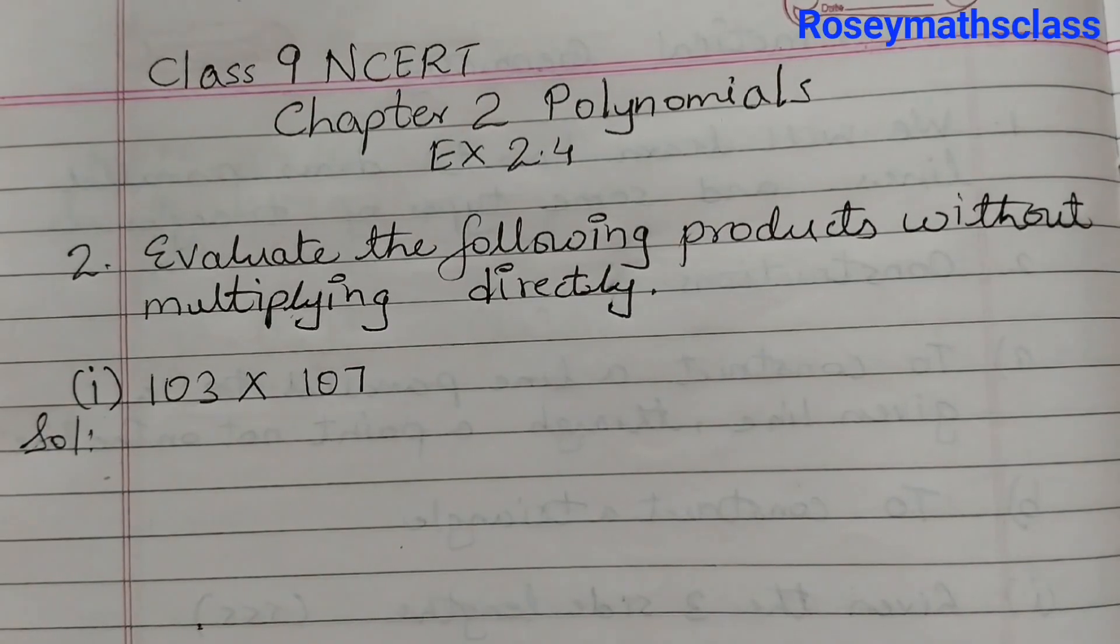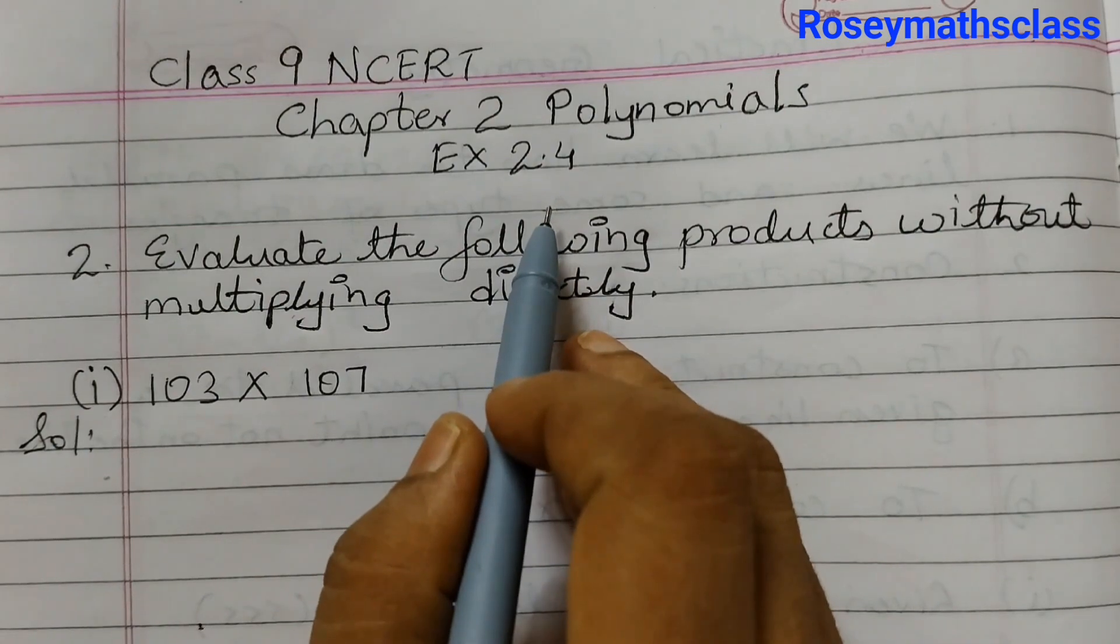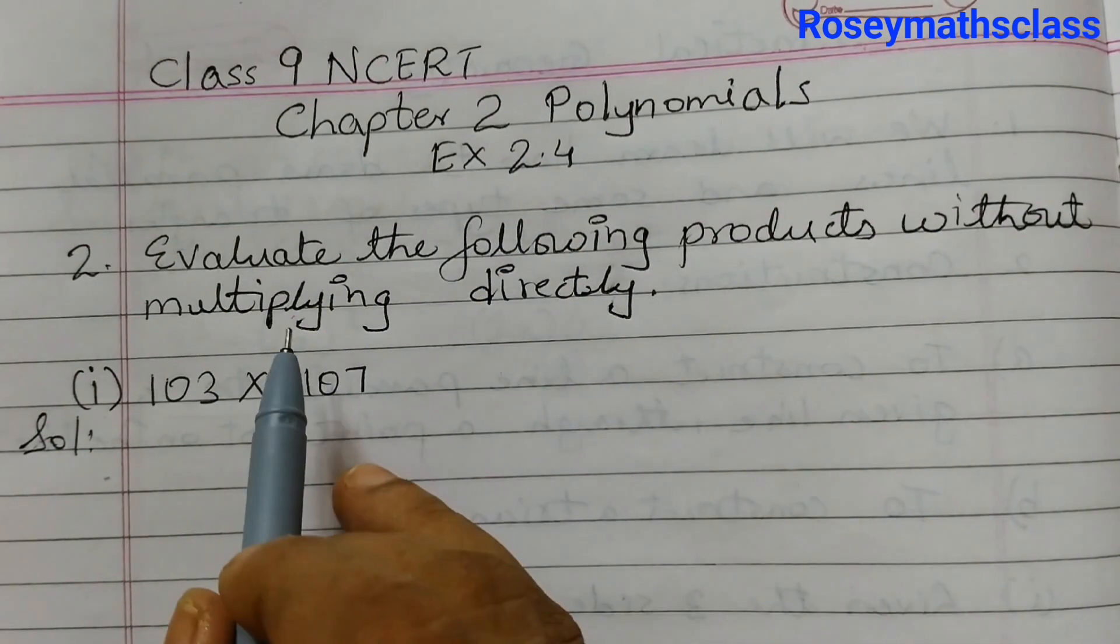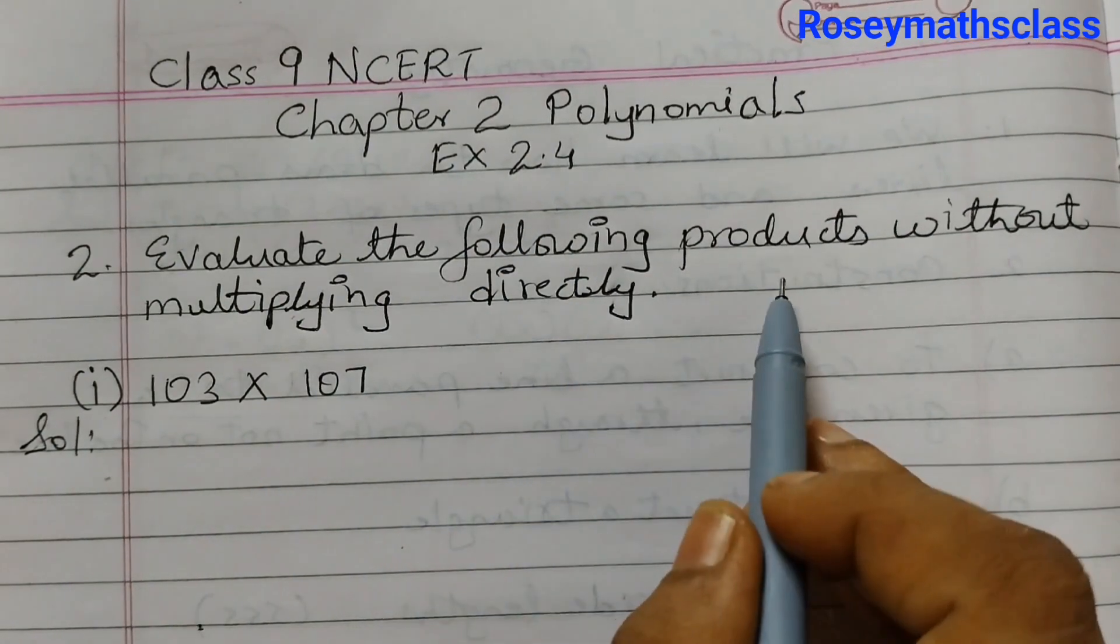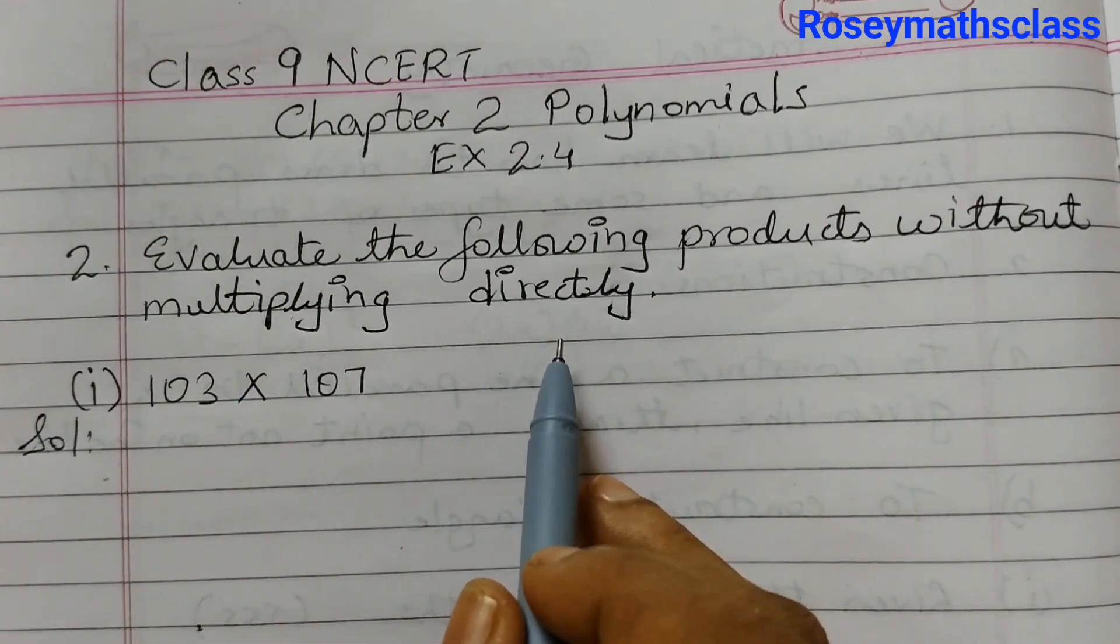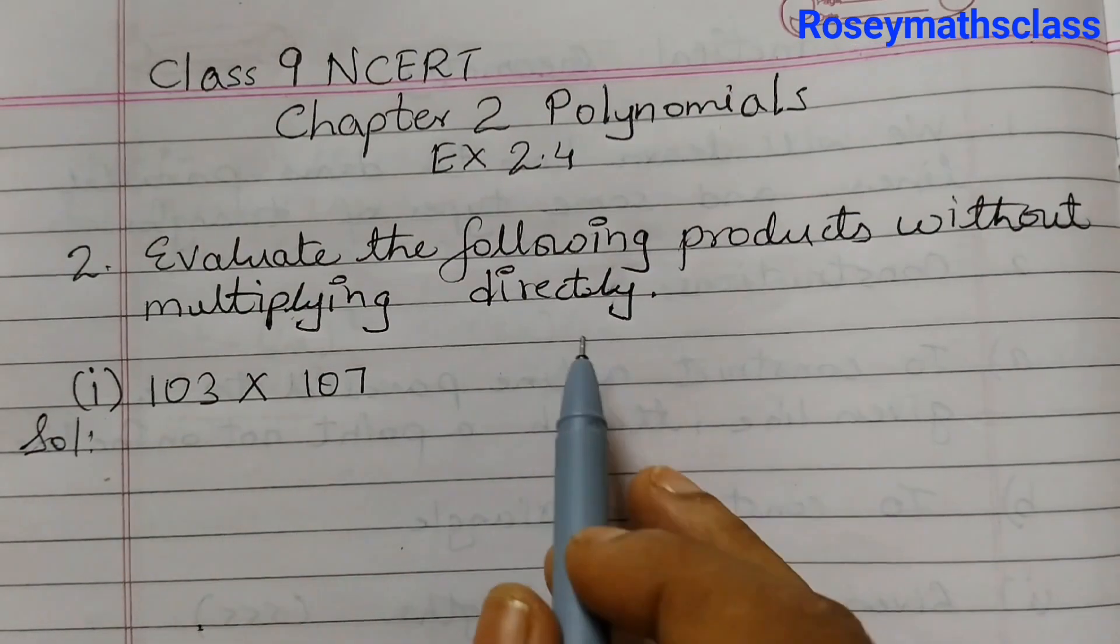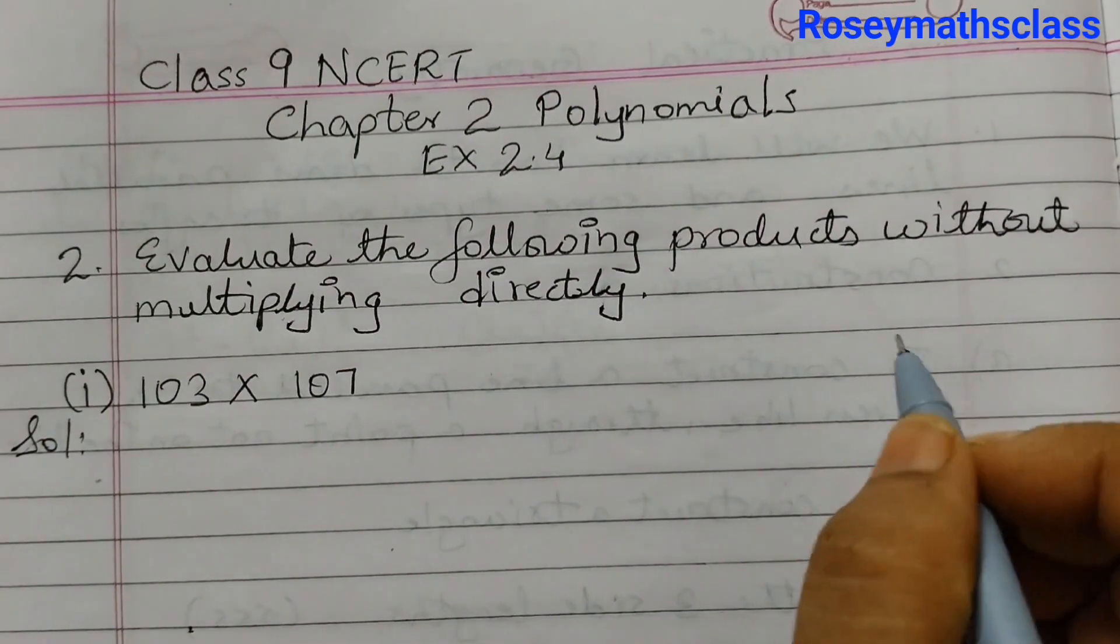Hello students, in this video we shall discuss question number 2 of exercise 2.4, chapter name is polynomials. Evaluate the following products without multiplying directly. So here we have 103 into 107. If you do it directly, that means 103 into 107 how we generally multiply.